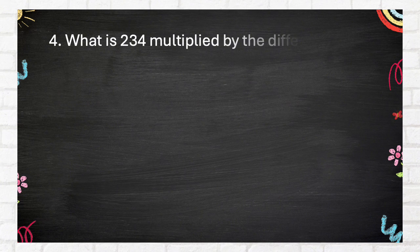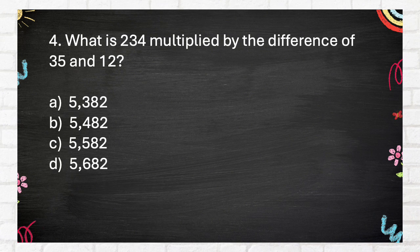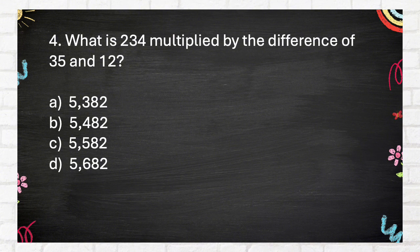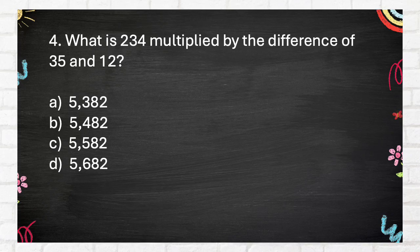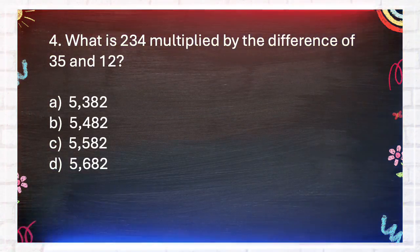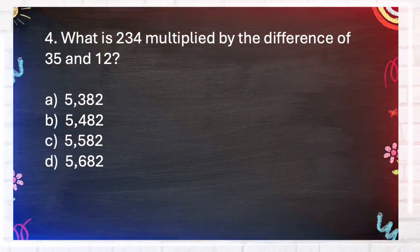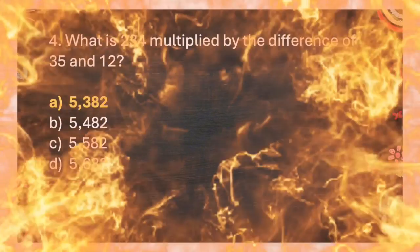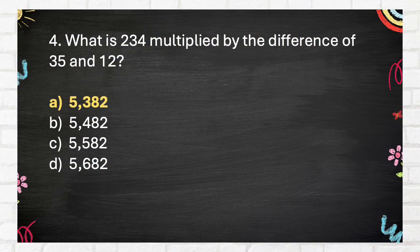Question number 4. What is 234 multiplied by the difference of 35 and 12? A. 5,382, B. 5,482, C. 5,582, D. 5,682. The answer is A. 5,382.